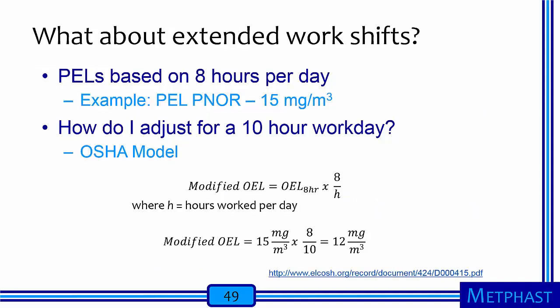What about extended work shifts? Permissible exposure limits are based on a worker who works 8 hours per day, 5 days a week. To adjust the limit for a worker working 10 hours per day, there is the OSHA model, which calculates a modified OEL by multiplying the 8-hour OEL by the ratio of 8 hours divided by the actual hours worked. For example, the modified OEL would be 15 mg/m³ times 8/10, giving a modified OEL of 12 mg/m³. The OEL is lower for a worker who works longer hours because their body doesn't have as much time to recover. There are other models outside the scope of this lecture available via a provided link.